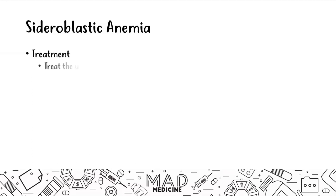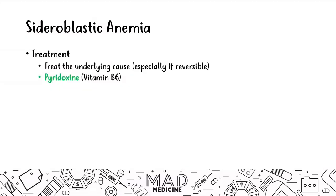When it comes to treatment of sideroblastic anemia, the first thing you want to do is treat the underlying cause of the patient's disease. So if they have secondary anemia due to alcohol intoxication, lead poisoning, or vitamin B6 deficiency, treat the underlying cause first. You can also give pyridoxine, which is vitamin B6, as a treatment for sideroblastic anemia to increase the proper function of ALA synthase in case you have a vitamin B6 deficiency.